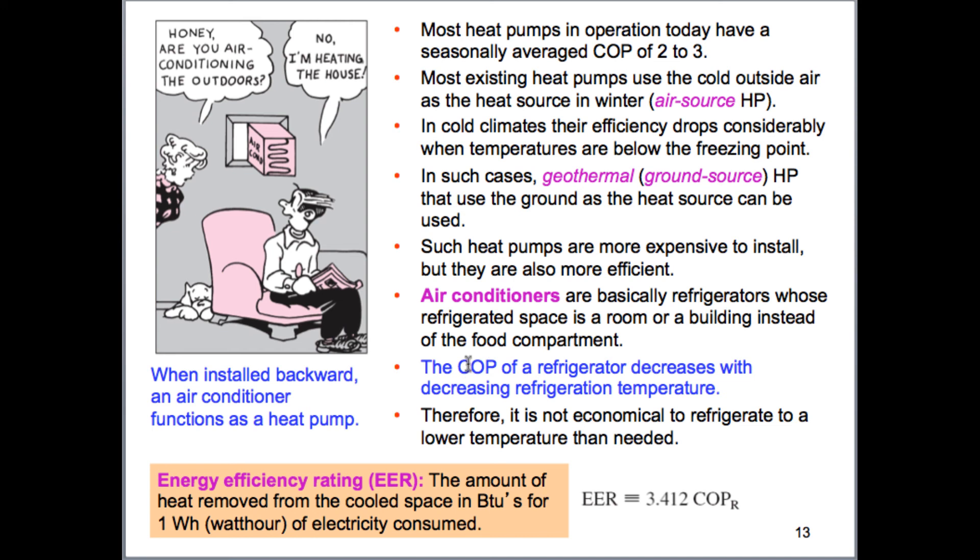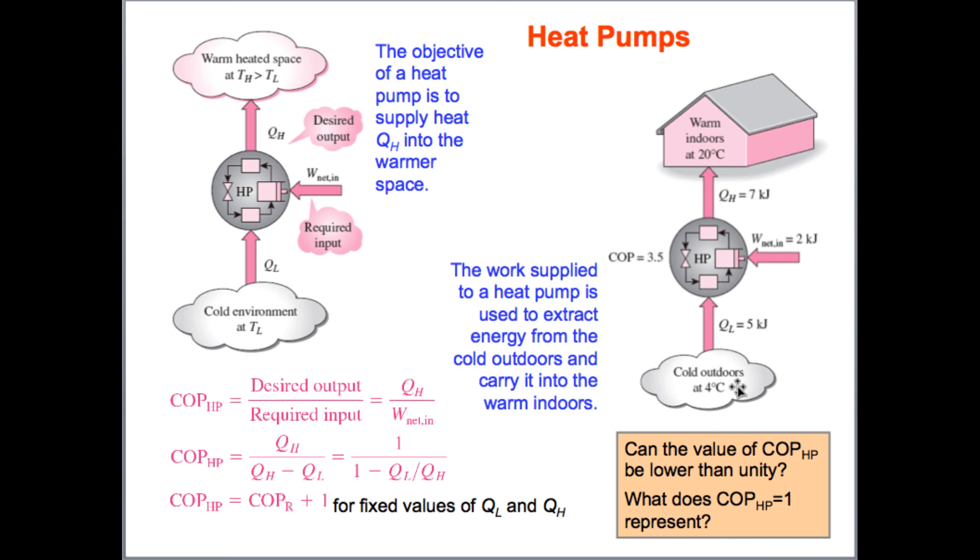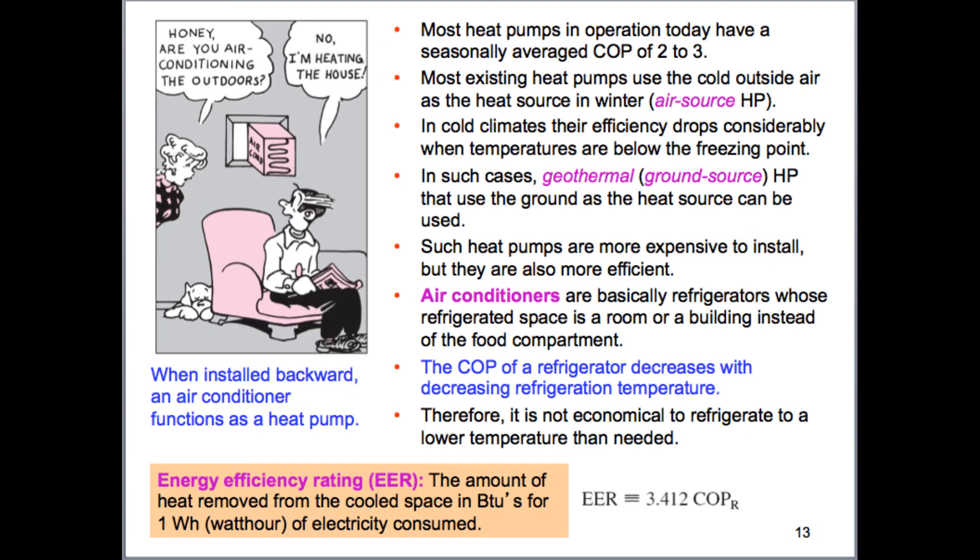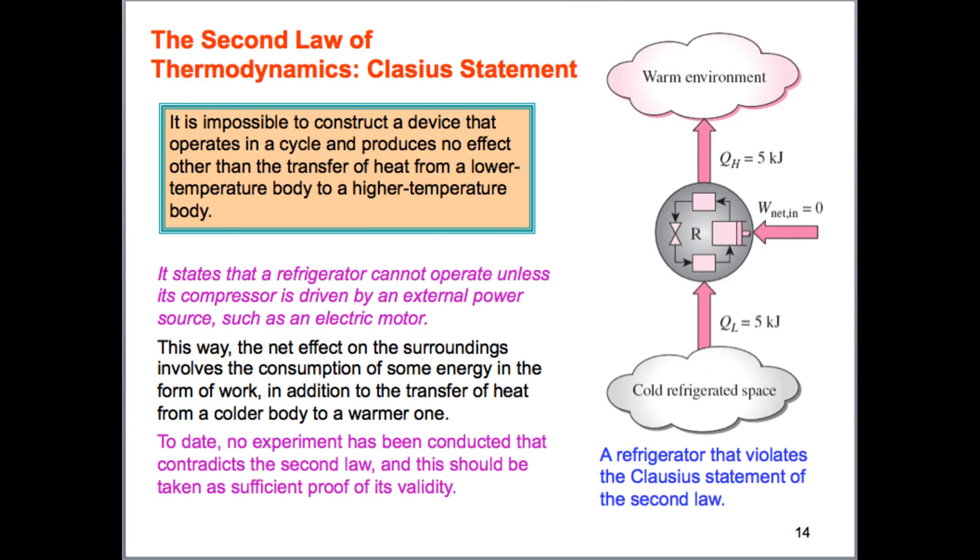So, a couple things to notice about refrigeration type cycles. One is that as the outdoor temperature, let's say here, or not necessarily outdoor, but whatever temperature is here, as this decreases, the efficiency of your refrigeration cycle is going to be decreasing. So, basically, the coefficient of performance decreases for different temperatures. So, basically, don't refrigerate something too much or too cold if you don't need to because it's going to take a lot of power to do that. Coefficient of performance that you can expect for heat pumps is between 2 and 3, and that's just basically a rule of thumb.